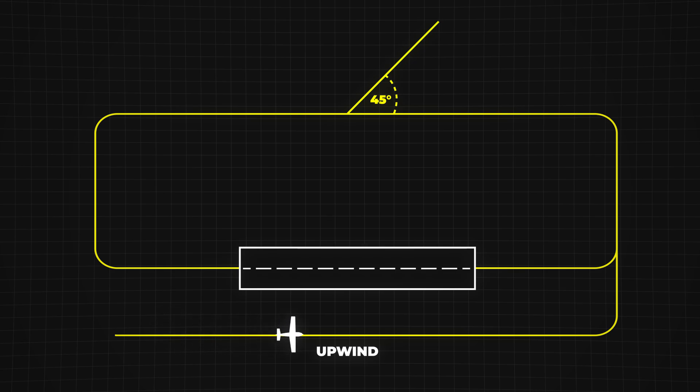At non-towered airports, pilots announce their positions using the names of the pattern legs. This helps other pilots understand where aircraft are in the pattern and make safe decisions.